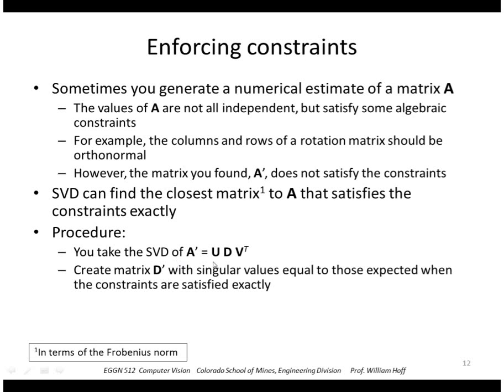Then we throw away this D, and we create a new matrix called D prime that has the singular values equal to those that we want when the constraints are satisfied exactly. And then we just reform our matrix using that D prime and using the original U and V that we obtained from up here. So by construction, this matrix will satisfy the desired constraints.